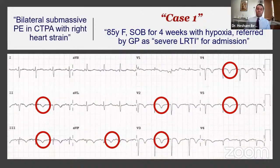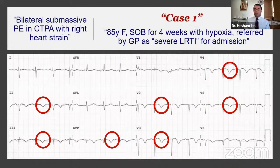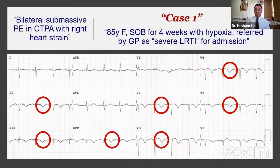That cause is acute pulmonary hypertension — in emergency medicine language, massive pulmonary embolism. This lady was found to have bilateral submassive pulmonary embolism on CTPA with right heart strain. There was a long discussion between the respiratory and emergency medicine teams about thrombolysis, but she responded well to IV fluids. Due to her age and comorbidities, the decision was not to thrombolyze, and she survived to discharge.